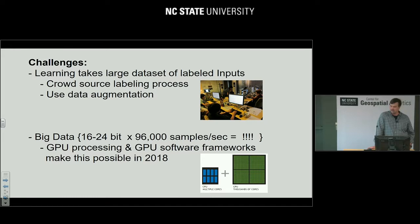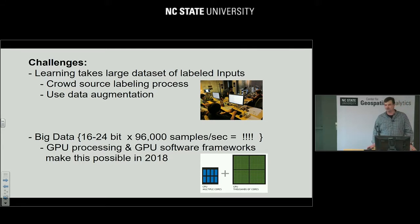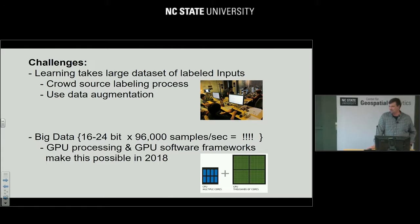Another challenge is the sheer volume of data. Recording at up to 96,000 samples per second at 16 to 24 bits, you accumulate data very quickly. The good news is that GPUs — graphical processing units — are now being used for deep learning and cross-correlations. The software framework on top of them makes this practical. A student here was doing basic clustering and brought a 10-hour desktop computation down to under 10 minutes on the HPC with enterprise-class GPUs.